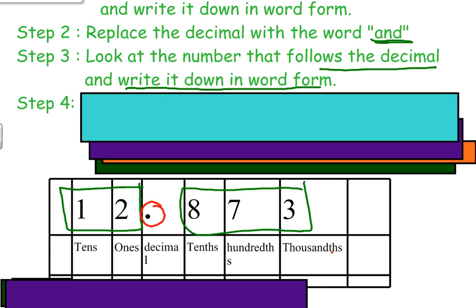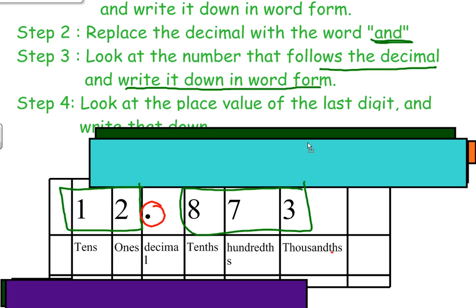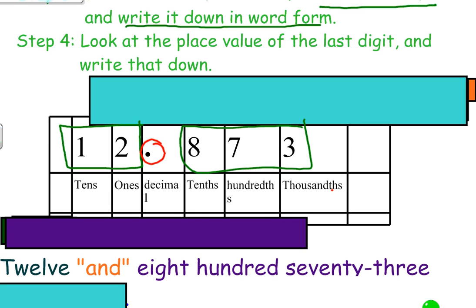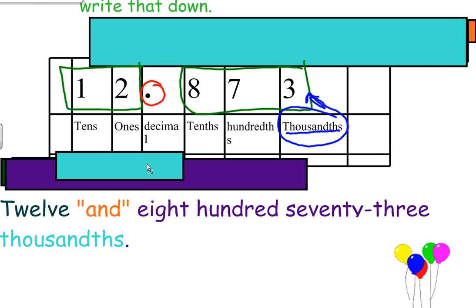Now one final step, and this is the step that makes everything come together in this process. Step four, we need to now look at the place value of the last digit. This last digit place value is thousandths. We simply add that word onto the end of our word form.